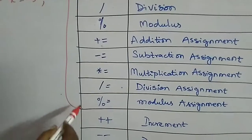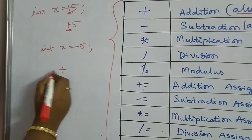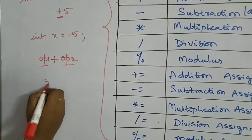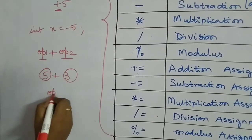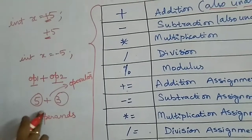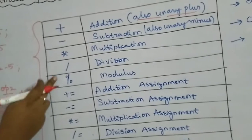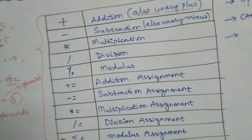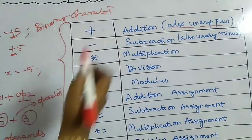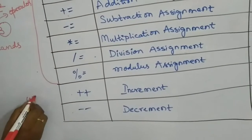From the plus and minus operators onwards — including multiplication, division, modulus, and the compound assignments — all these are binary operators. A binary operator means there will be two operands, for example in '5 plus 3', the 5 and 3 are operands and plus is the operator. Plus and minus can also be used as unary operators, and the last two — increment and decrement operators — are again unary operators.